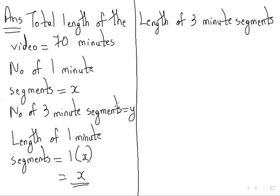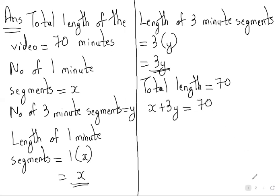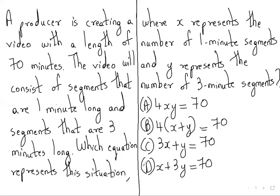The total length of the video is 70 minutes. We get the total length by adding both the lengths of one-minute segments and three-minute segments. The one-minute segment total is x and the three-minute segment total is 3y. So the equation is x plus 3y equals 70.